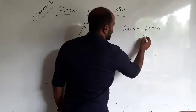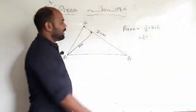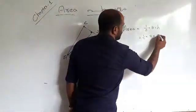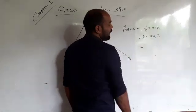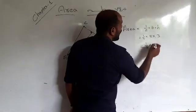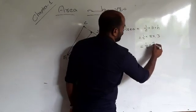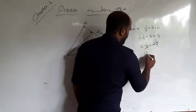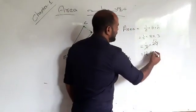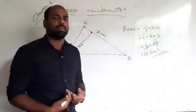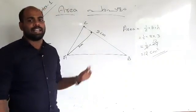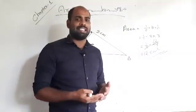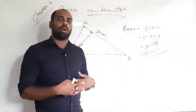We can calculate the area. Area of triangle ABC is equal to half into base into height. Half into base — base is 8 — into height — height is 3. Half into 8 into 3 is equal to 24. Half into 24 is equal to 12. So the area of the triangle is 12.